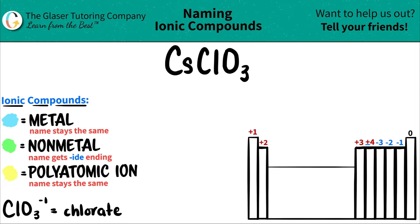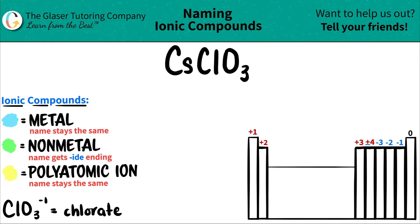Here's a trick: if you have a compound that has three or more different elements, you know that you're dealing with at least one polyatomic ion. So it's always easiest to identify the polyatomic ion and then work from there.